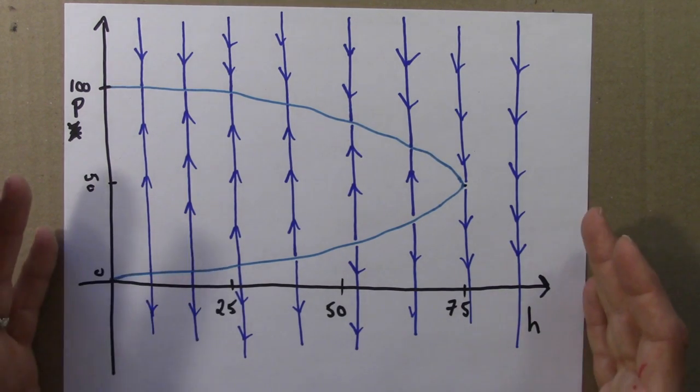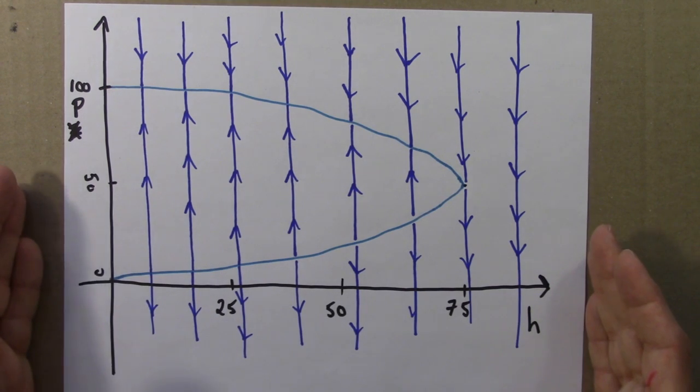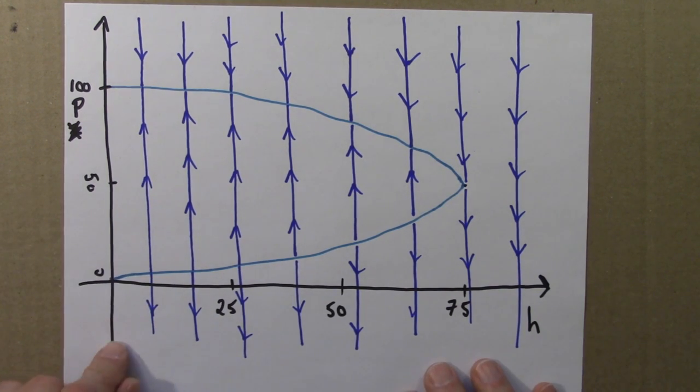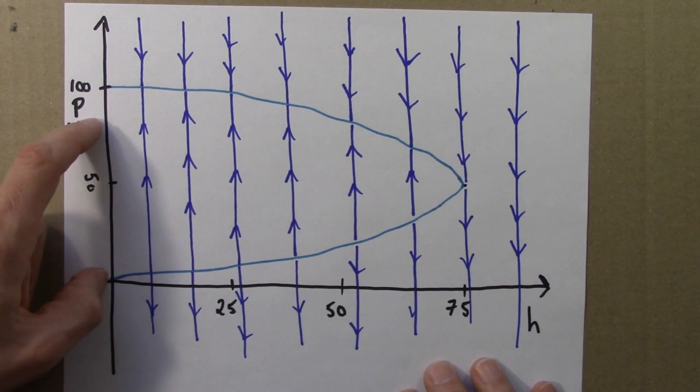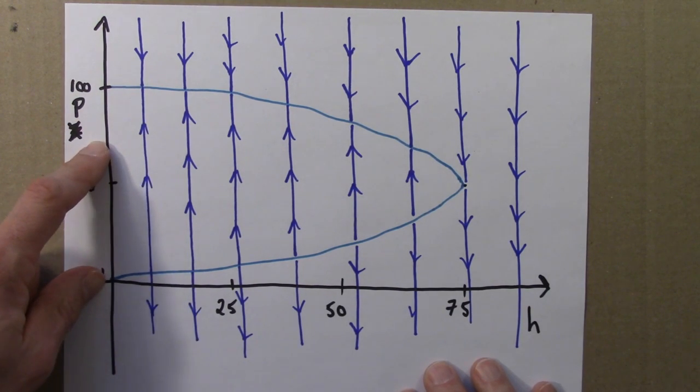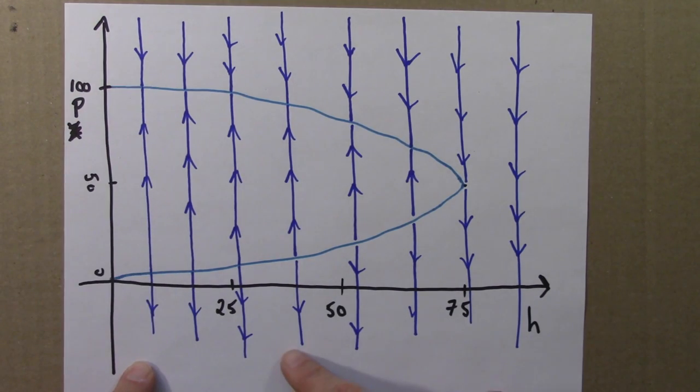So this type of diagram is known as a bifurcation diagram. It shows us how the long term behavior of a system changes as we change a parameter. So the parameter that we're changing is h. We can imagine increasing h, slowly increasing the amount of fishing.